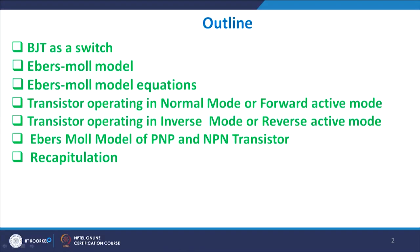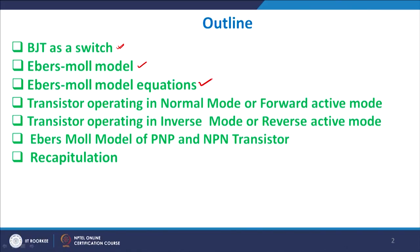We will start today to look into BJT as a switch and then look into the Ebers-Moll model. The outline of this set of presentations will be: first, BJT as a switch — can we use BJT for switched networks? Then we look at the Ebers-Moll model and its equations, which is a circuit simulation model, so we can directly port these equations into circuits for circuit simulation.